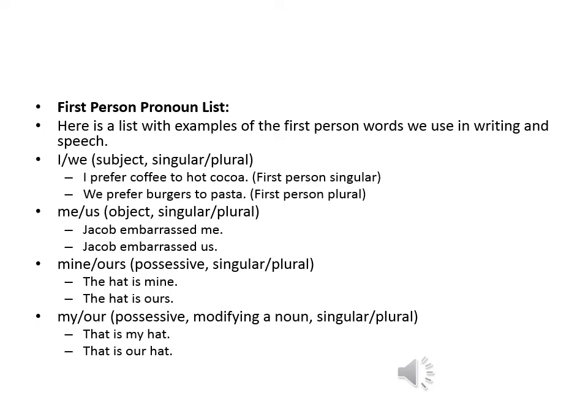Here I have broken down the first person pronouns. The singular form is 'I' and the plural form is 'we.' For example, 'I prefer coffee to hot cocoa' — that is first person singular — and 'We prefer burgers to pasta' — that is first person plural. We also have 'me' or 'us', which are object forms. The singular is 'me' and the plural is 'us.' For example, 'Jacob embarrassed me' and 'Jacob embarrassed us.' Then we have 'mine' or 'ours', which is the possessive form — singular is 'mine' and plural is 'ours.'